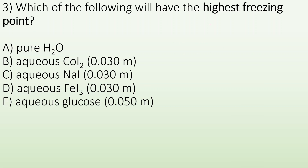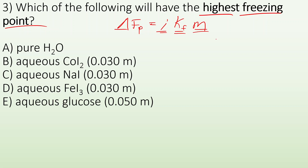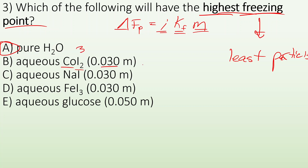Number three — which of the following will have the highest freezing point? We know that the change in freezing point is going to equal i × Kf × m: the number of particles it breaks up into times some constant times its molality. The freezing point always goes down, so if we want the highest freezing point, we want the least concentration of particles. Pure H2O — that's the front runner. But let's check: CoI2 at 0.03 molal breaks up into three particles, so we'd end up with a particle concentration of 0.09 molal.